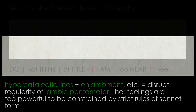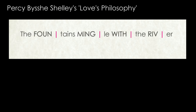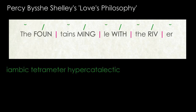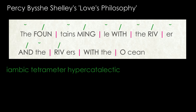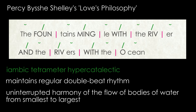Let's now go back to the problematic first line of Love's Philosophy: 'The fountains mingle with the river.' If we mark the feet in, we can see that it is written in iambic rhythm, but there is an extra unstressed syllable at the end of the line, so we would say it is written in iambic tetrameter hypercatalectic. If we look at the next line, which is written in the poem's base metre of trochaic tetrameter, having an unstressed syllable at the end of the line with a stressed syllable at the beginning of the next maintains a regular double beat rhythm and enhances the idea of the uninterrupted harmony of the flow of bodies of water from the smallest to the largest.